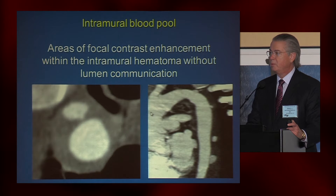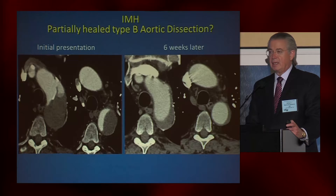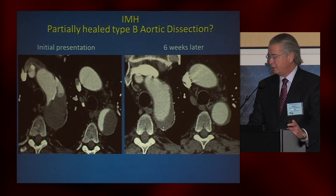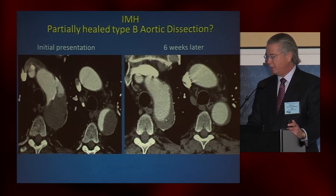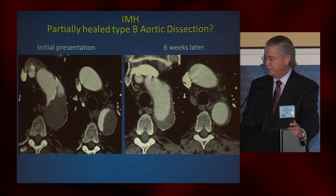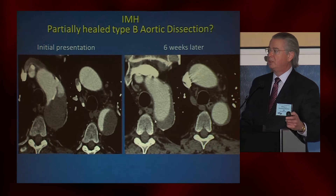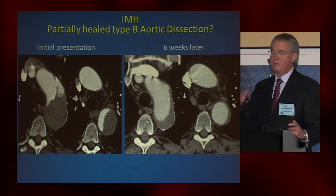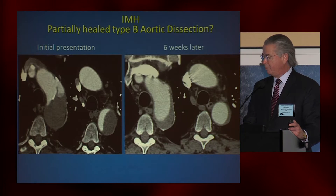If any of these findings develop on follow-up, it would be an indication for intervention. The question is whether intramural hematoma is different from aortic dissection. We saw a patient at UCLA — a patient of Dr. Rickberg — who presented with an intramural tear and an almost completely thrombosed false lumen. Six weeks later it was all healed, showing only intramural hematoma. I would submit that this is probably a continuum of disease — a similar pathology in the aortic wall with a different type of presentation.